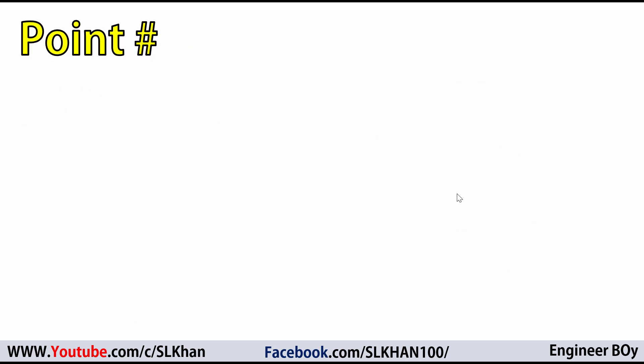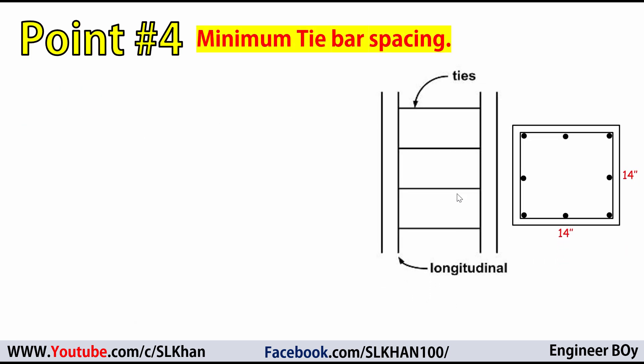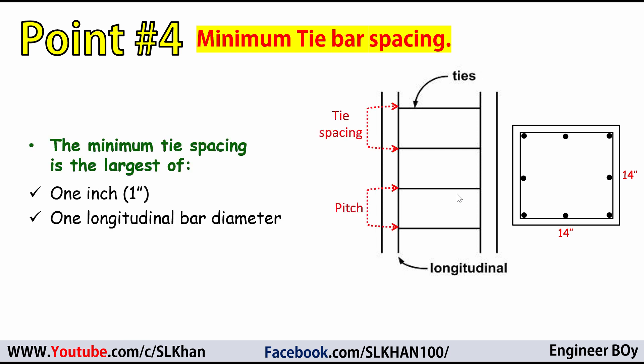Point number 4 is about the minimum tie spacing, also called pitch. The minimum tie spacing is the largest of: 1 inch, or 1 longitudinal bar diameter. So if the main bar diameter is larger than 1 inch, the bar's diameter governs. If the main bar diameter is less than 1 inch, the minimum tie spacing must be 1 inch.